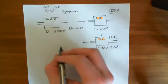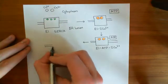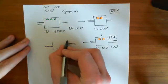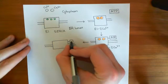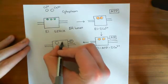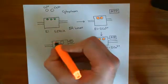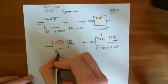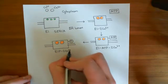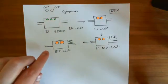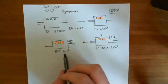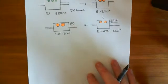After ATP is hydrolyzed, all that remains is a phosphate group bound to the aspartate residue, with two calcium ions still bound. This is now known as the E1-P-Ca²⁺ conformation — E1 because the ionic binding site is still closer to the cytoplasm or sarcoplasm than to the ER lumen, P denoting the phosphate group, and two Ca²⁺ indicating two calcium ions are bound.